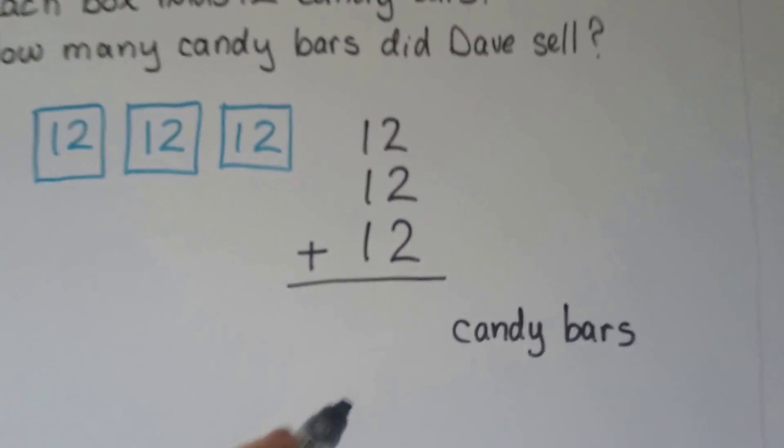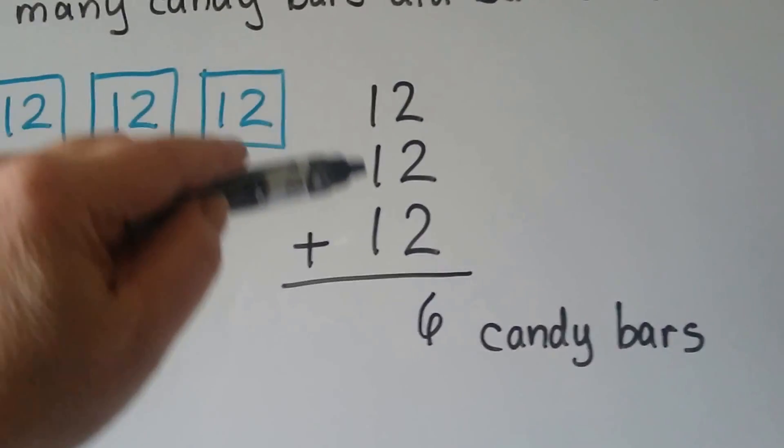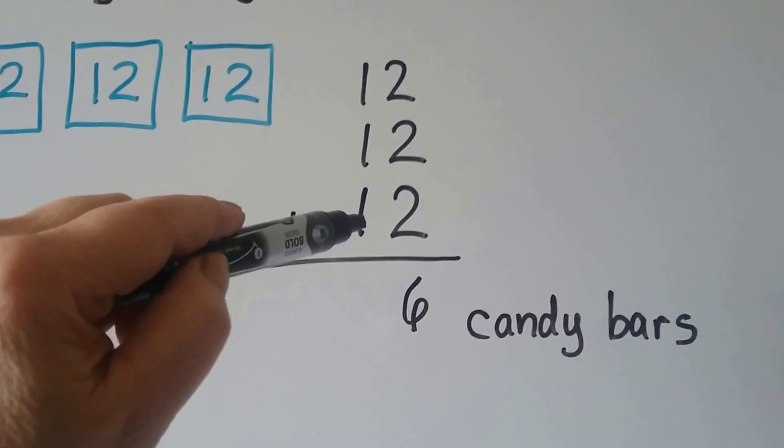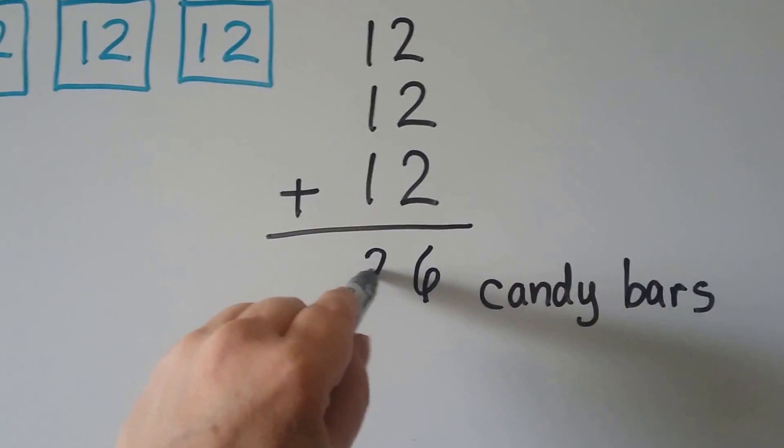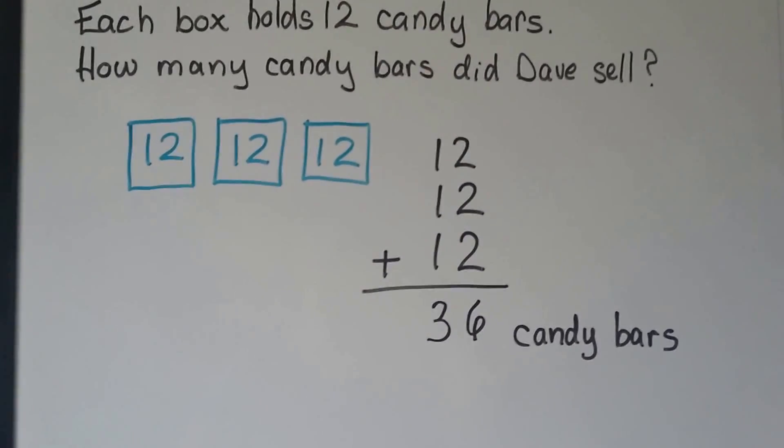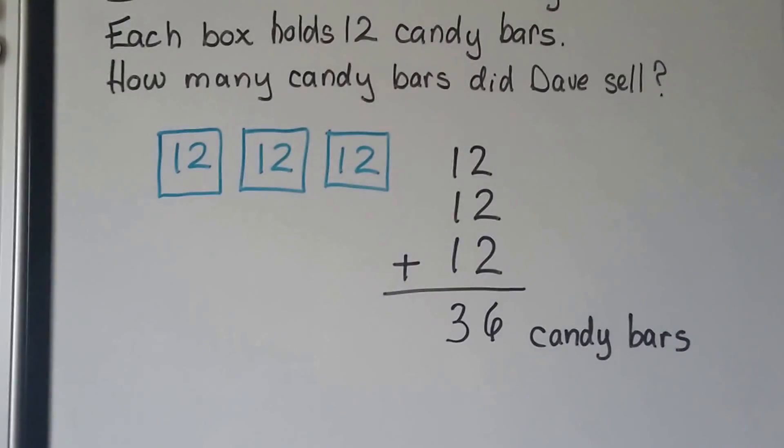That's two plus two is four, five, six. So we have six ones. And we need to add the tens place. One plus one plus one is equal to three. Three tens. That means he sold thirty-six candy bars. Drawing the boxes of twelve helped us.